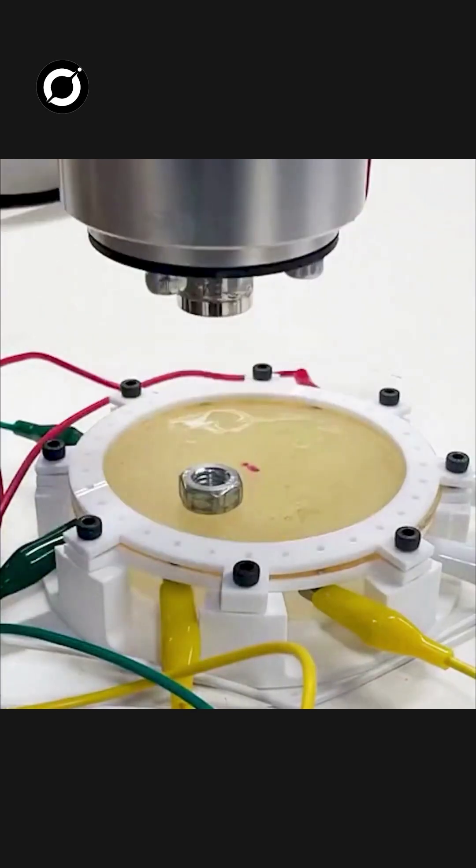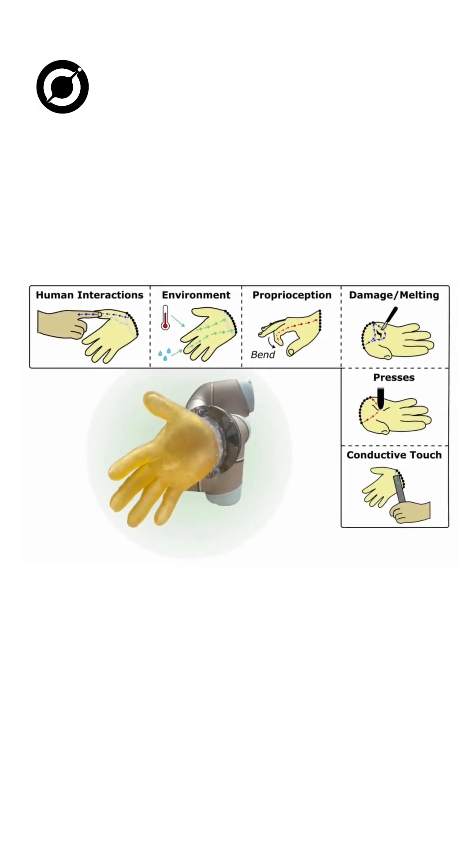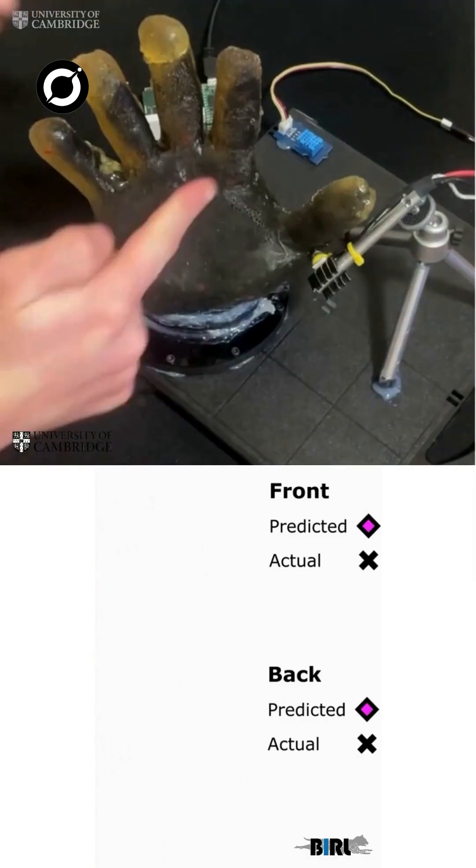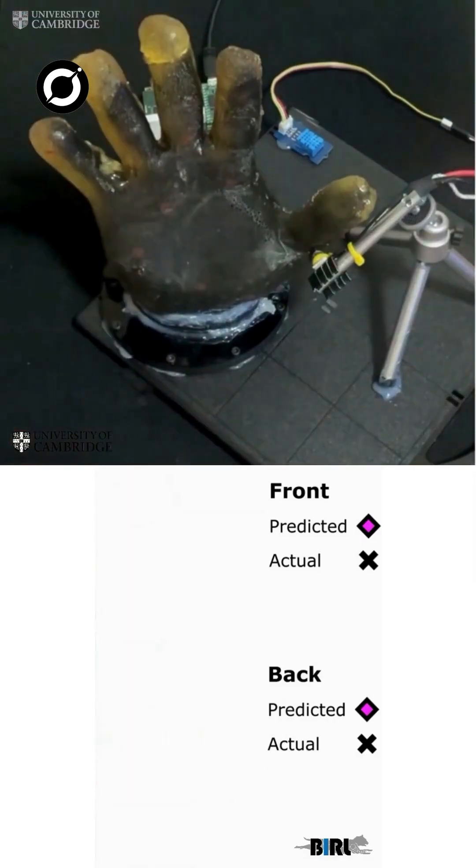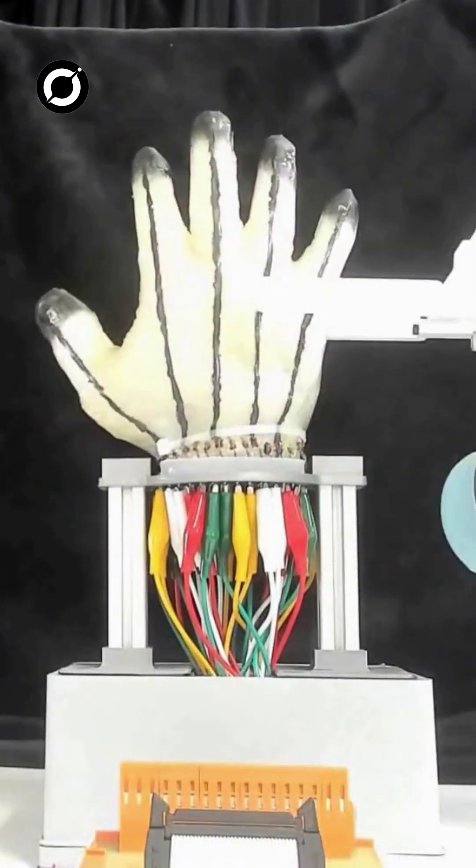The new robotic skin uses a flexible electronic system with embedded sensors that detect temperature changes, pressure variations, and even painful stimuli. Unlike previous designs, this skin is highly sensitive and durable, allowing robots to respond appropriately to their surroundings.